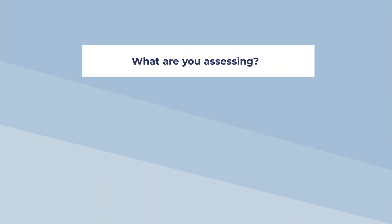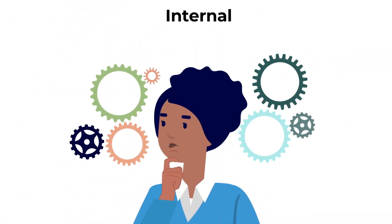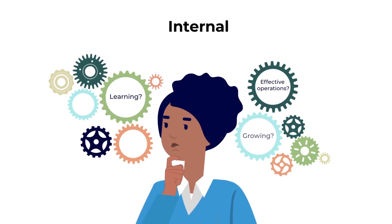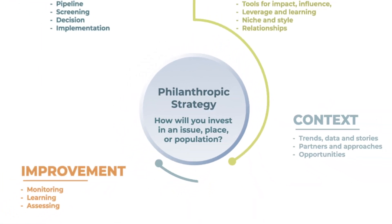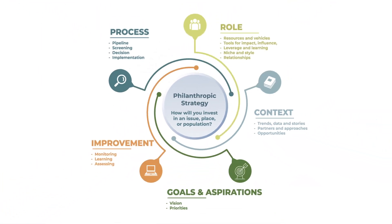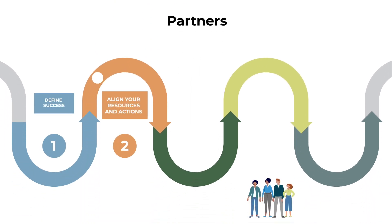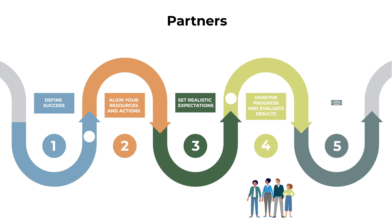First, consider what you're assessing. You'll want to assess three areas: Internal — are your operations and investments effective, and how are you learning and growing as a philanthropist? Philanthropic strategy — how are you advancing your mission and progressing on the goals you've set, and how do you monitor and assess the performance of your activities and programs? Partners — what is the progress of your grantee organizations, coalitions, or other partners? Are they accomplishing their objectives? What else might they need to be successful?